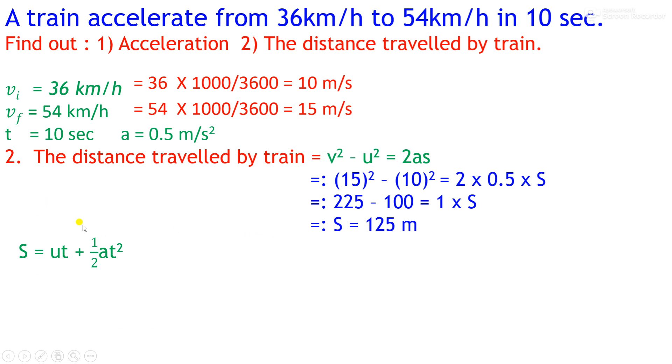Now calculate the distance by using the second formula. By putting the values, we will get s = 10 × 10 + ½ × 0.5 × (10)² = 100 + ½ × 5/10 × 100. After cancellation, we have 5 × 5 = 25, so 100 + 25 = 125 meters. We can see from both methods we have the same distance.